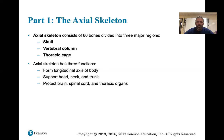The axial skeleton also protects the brain, spinal cord, and thoracic organs. Thoracic organs include your heart, lungs, and diaphragm in the mid-body region.